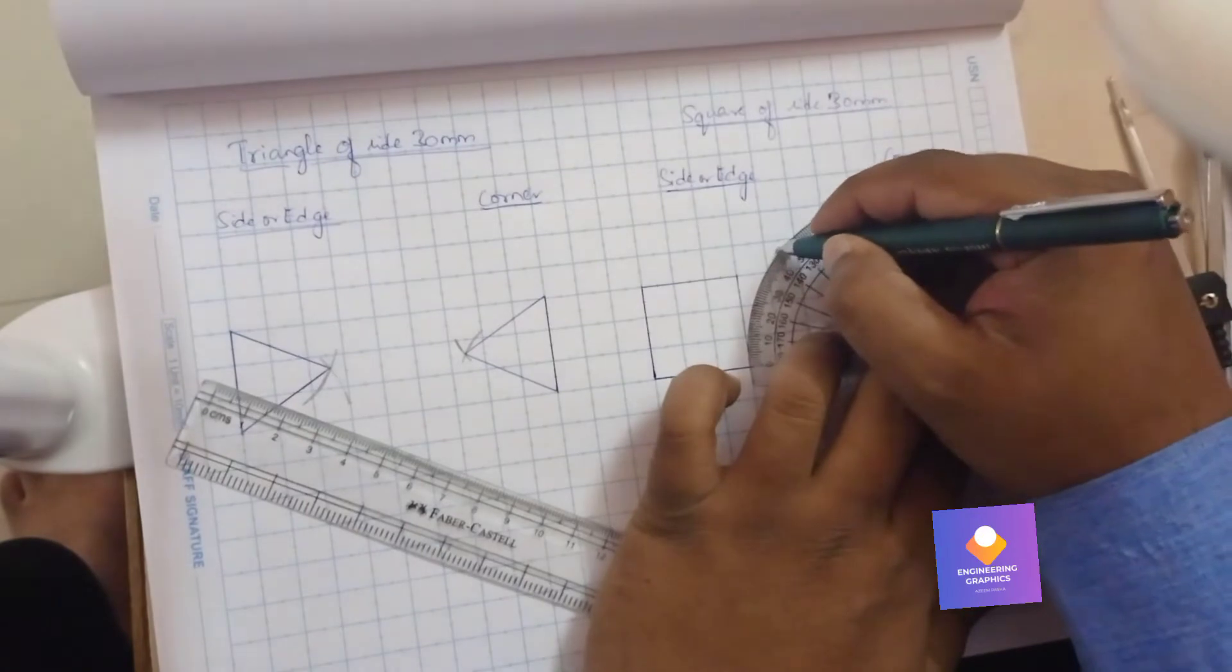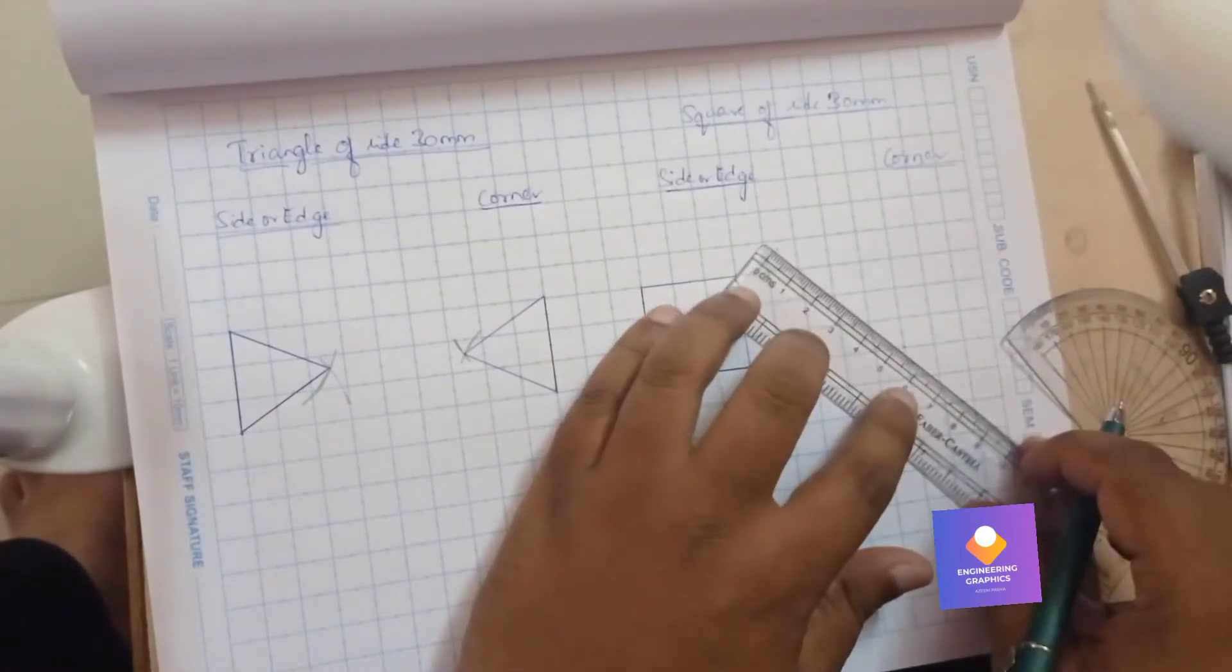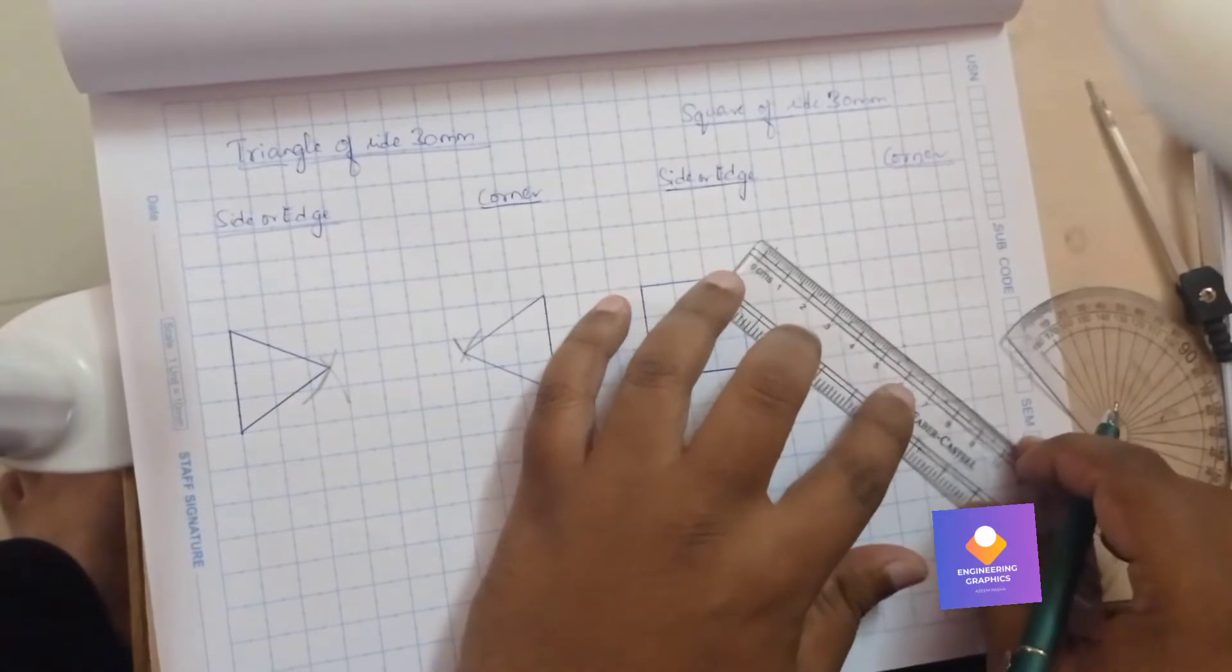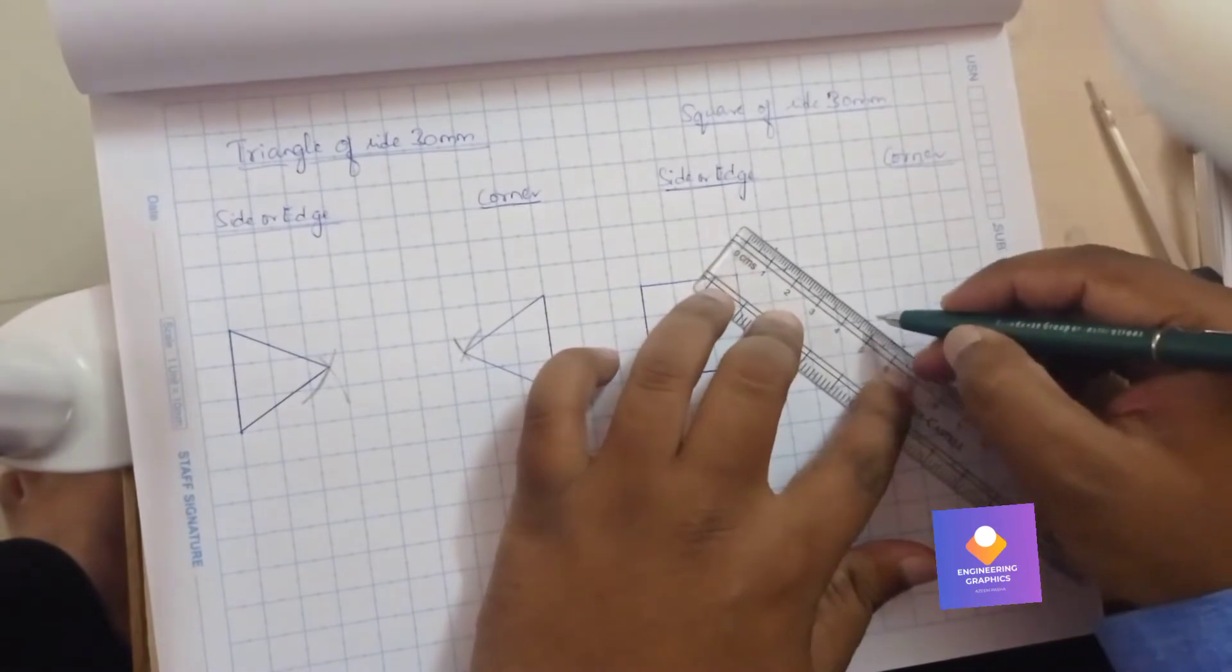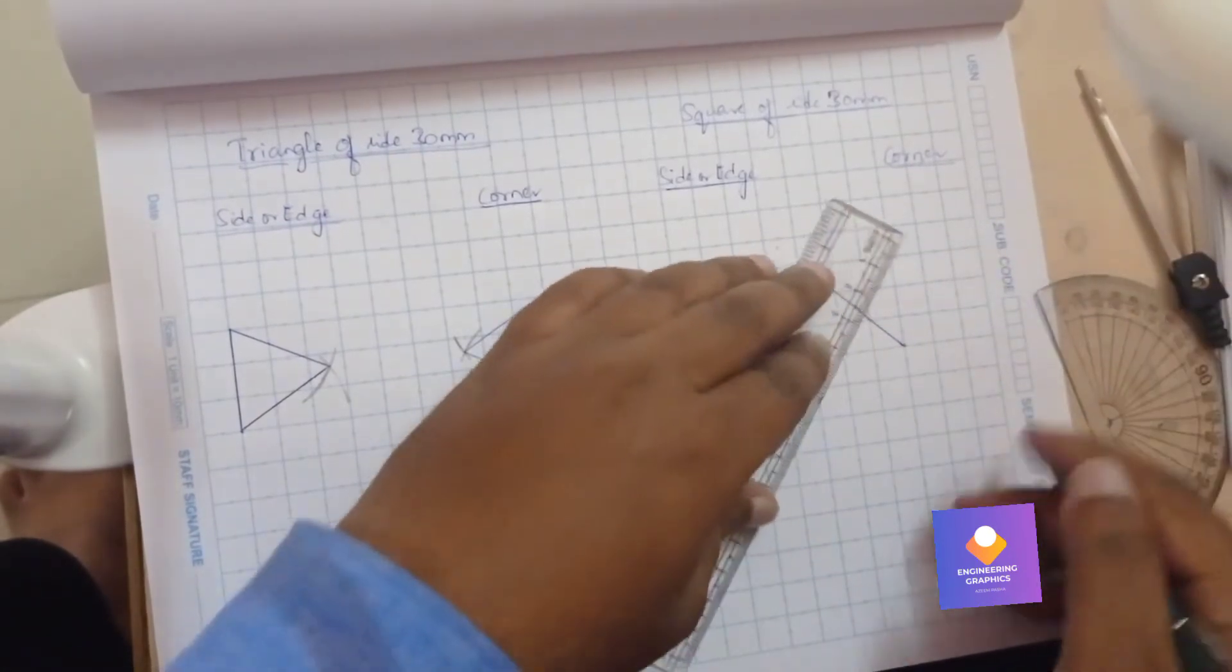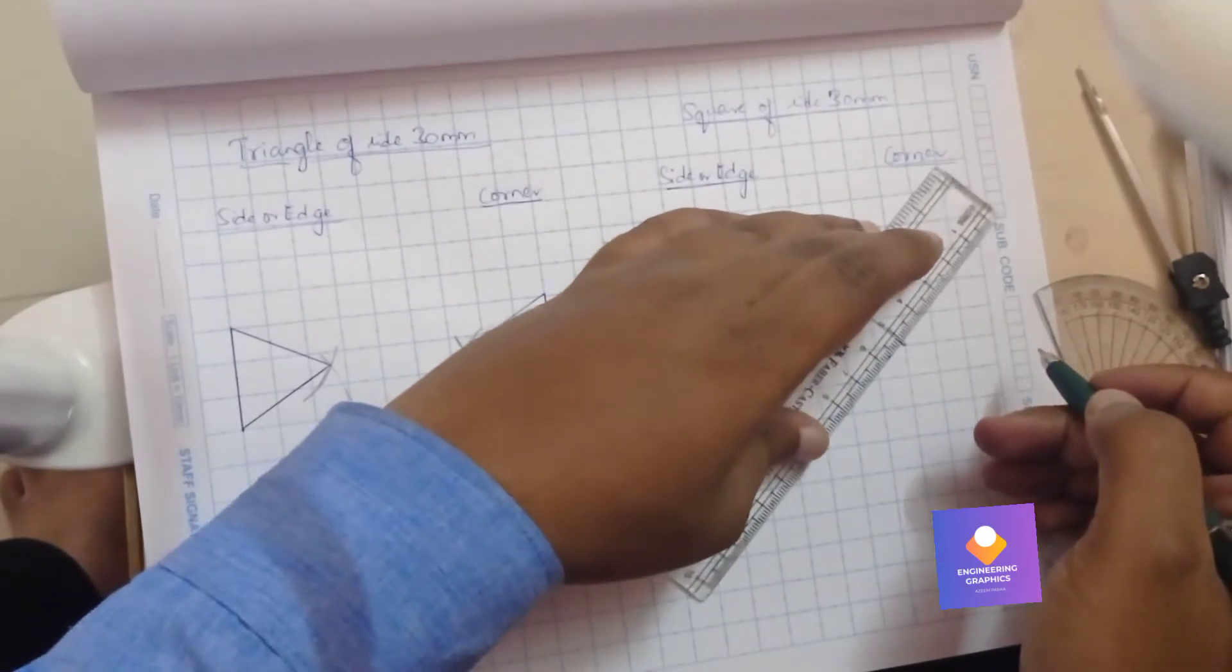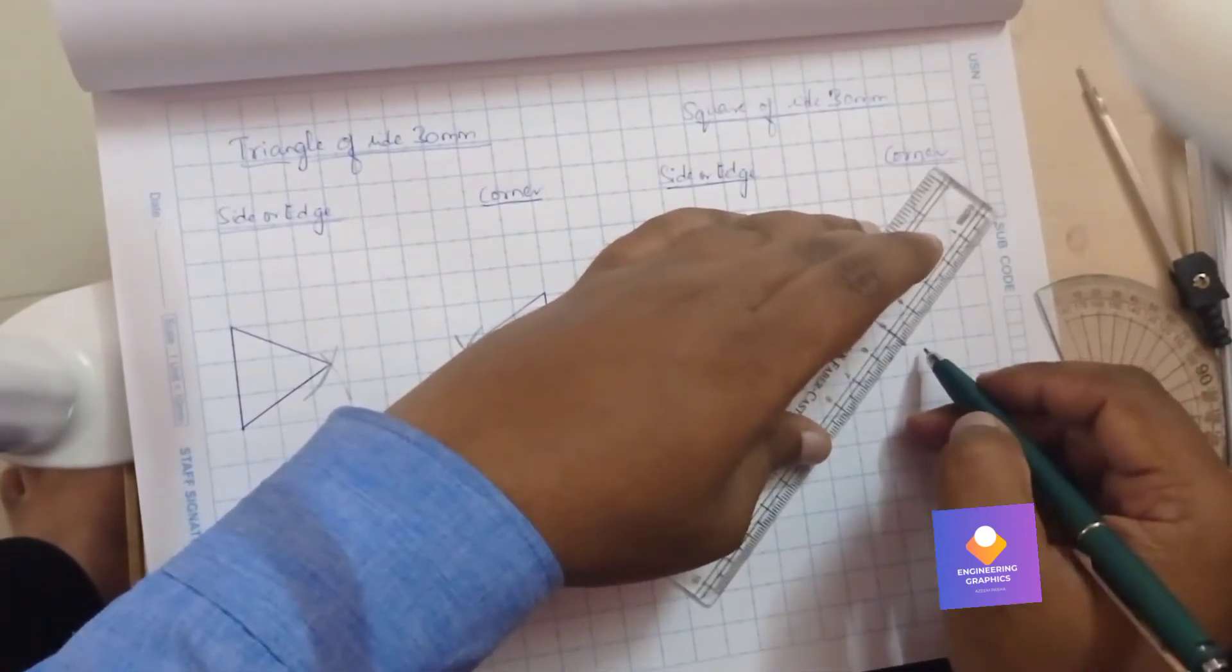Mark it. Now you take the scale to that marked angle point, keep the scale straight and mark for a length of 3, it is 30 mm or 3 centimeter. Again we do the same thing on the other side also. We take a scale with respect to that angle point, we will draw a 30 mm line.